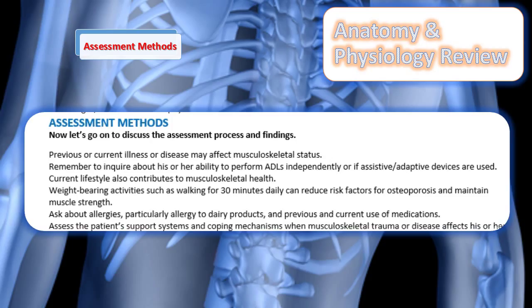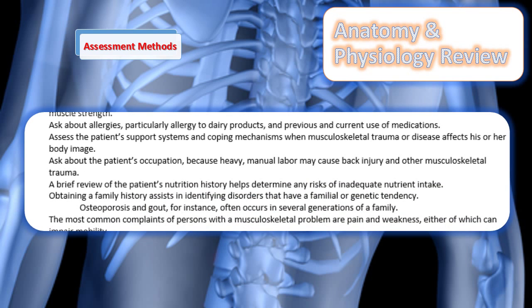When assessing a patient for musculoskeletal issues, ask about previous and current illness or disease affecting their musculoskeletal status. Find out how this has affected their ability to perform ADLs independently and what assistive devices they have used. Ask about their lifestyle, how their illness is affecting it, and what weight-bearing activities they are still able to perform. Teach and encourage them to do things that decrease the risk of osteoporosis and maintain muscle strength. Ask about allergies — particularly to dairy products — and previous or current medications. Assess the patient's support system and coping mechanisms for musculoskeletal trauma or disease.